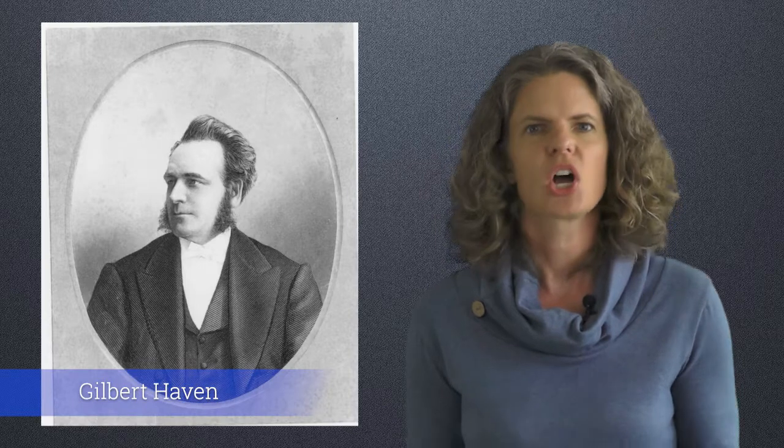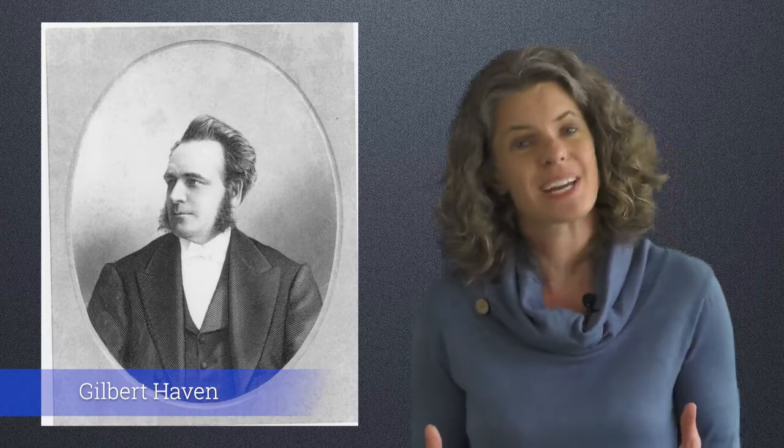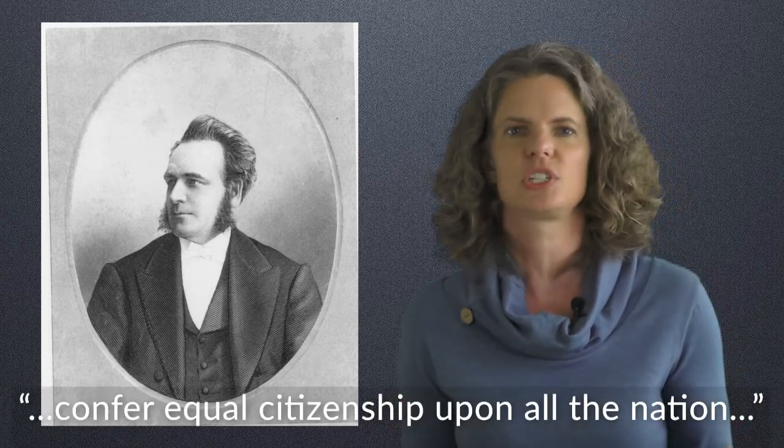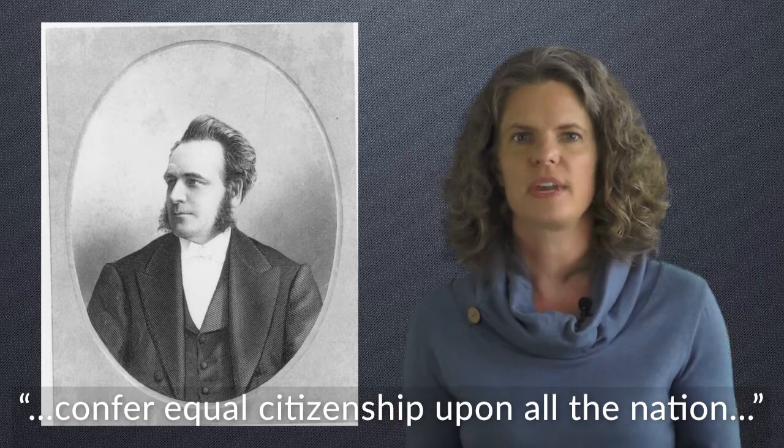In a funeral sermon for Abraham Lincoln, white Methodist minister Gilbert Haven called on the nation to finish what he took to be Lincoln's agenda for the end of the war. Haven declared that it was time to confer equal citizenship upon all of the nation and argued that voting rights for former slaves would prevent the half a million former aristocrats of the south from vaulting into authority again.